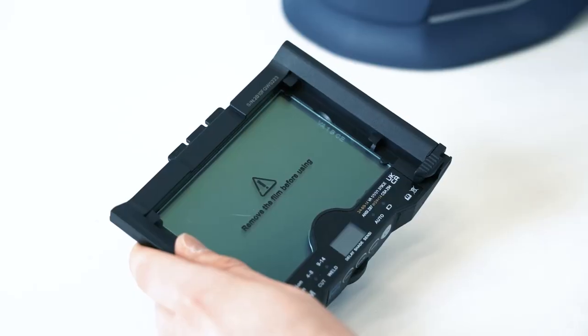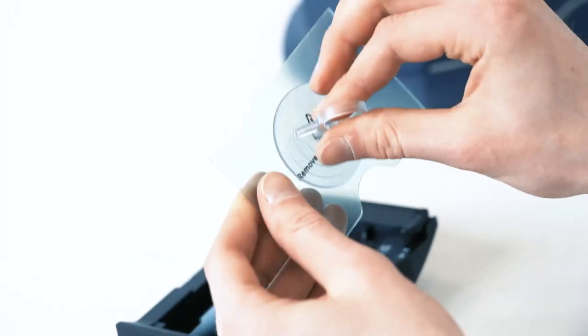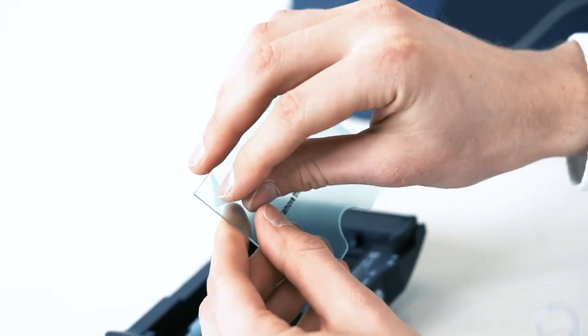Changing the lens is quick and easy. First, remove the used lens using the plunger. Remove the protective films on both sides of the new lens.